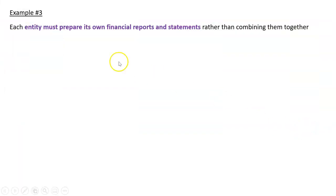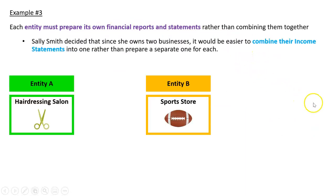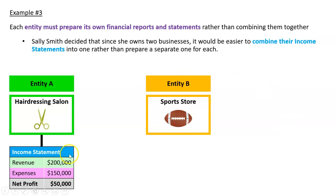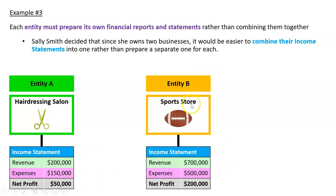Example three: each entity must prepare its own financial reports and statements rather than combining them together. Sally owns a hairdressing salon — Entity A — and a sports store — Entity B. She prepares an income statement for the hairdressing salon with revenues, expenses, and net profit, and Entity B, the sports store, has the same structure with different numbers for each separate entity.